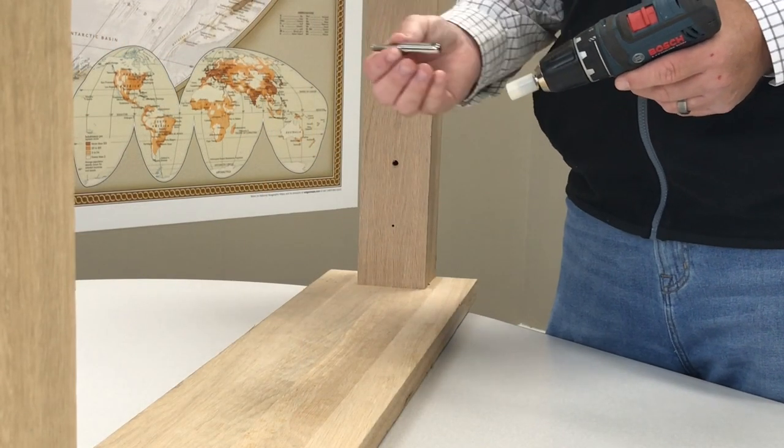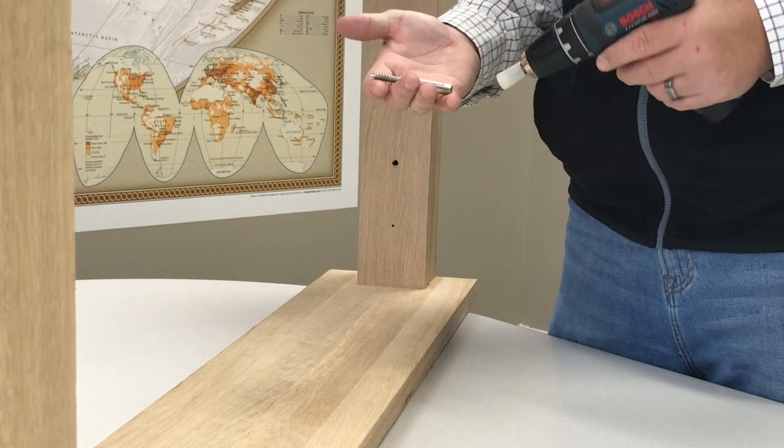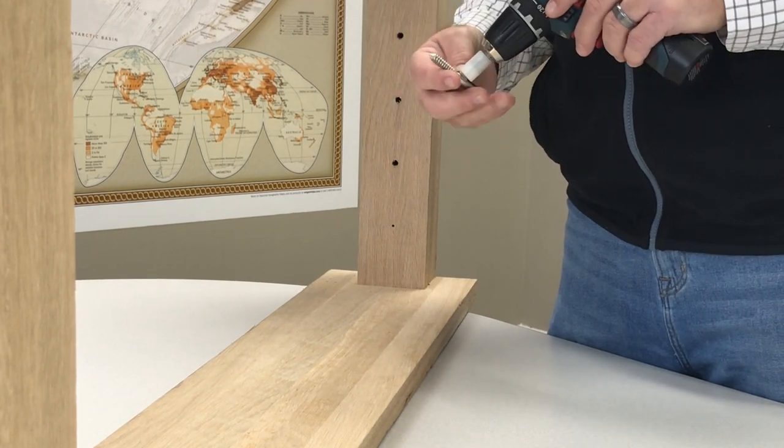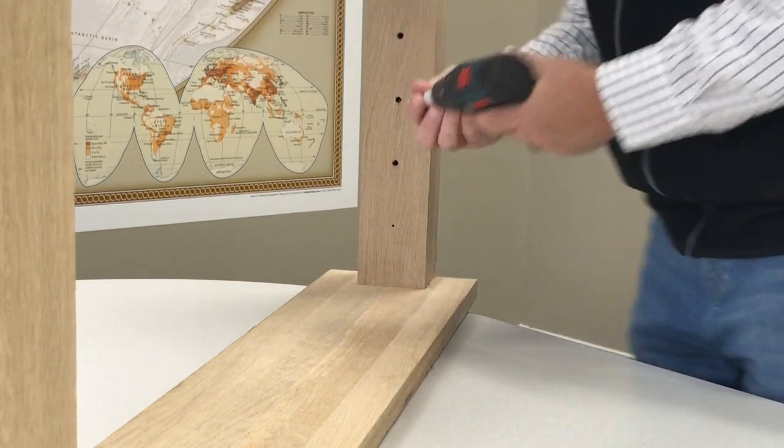Next, we're going to install the non-tensioning fitting first using the 3054 driver. In installing this, you want to ensure that the shoulder of this fitting is up against your post once it's all the way in.